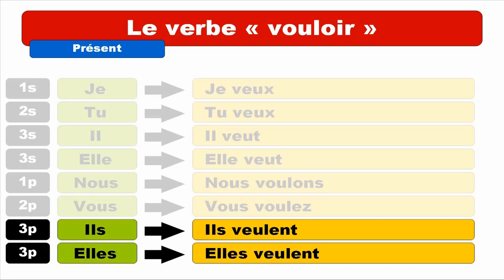So let's see that again: JE VEUX, TU VEUX, IL VEUT, ELLE VEUT — actually the same form. NOUS VOULONS, VOUS VOULEZ, ILS VEULENT, ELLES VEULENT. I do hope everything is clear for you. If it's not, don't be afraid to watch the video one more time. Bye-bye. Have a nice day.